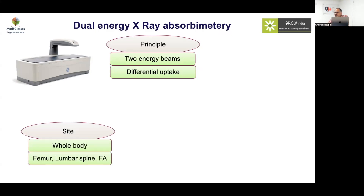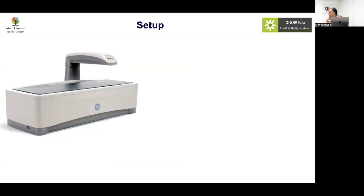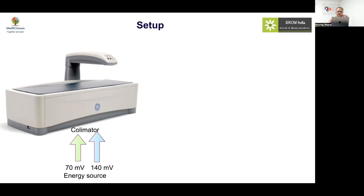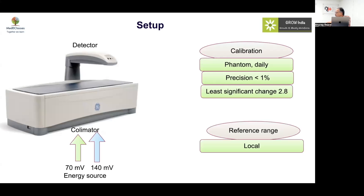You can scan the whole body, femur, lumbar spine, or forearm. There are many confounding factors, and the reference database used is also important. The energy source produces two beams at 70 and 140 millivolts, which are collimated and directed to a detector while the person lies in between. Calibration is done using a phantom of known density; precision should be less than 1% variation.